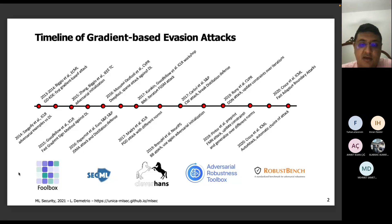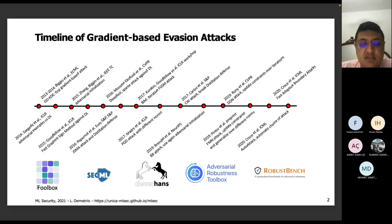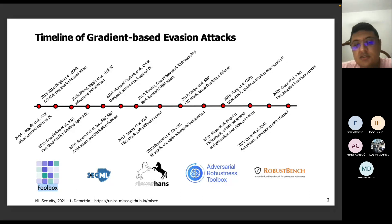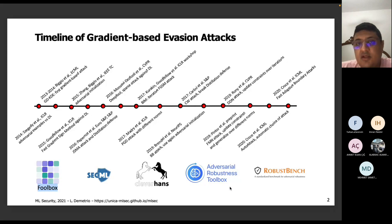There are different libraries you can use to apply various adversarial attacks during training or testing. One of the famous libraries is Foolbox, which applies adversarial attacks during the testing phase. SecML is an interesting library for different kinds of attacks during testing and training, including defenses. CleverHans is another interesting library for applying attacks during the testing phase. There are also other libraries from different laboratories for attacks during testing and training, and some include different defense strategies.